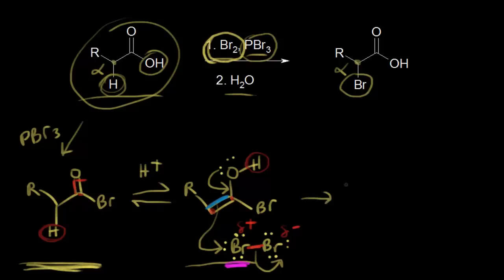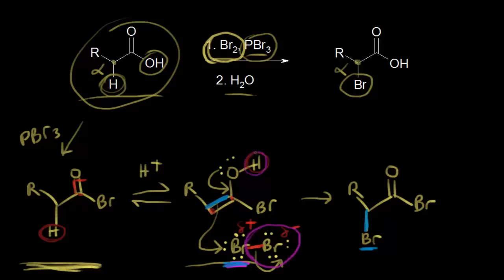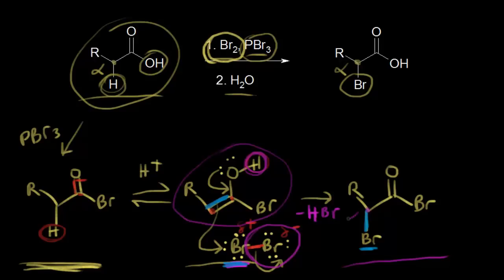So the electrons in the oxygen move in to form the carbonyl, the pi electrons in blue attack the bromine on the left, and the electrons in red come off onto the bromine on the right to form the bromide anion. We also lose a proton — loss of HBr at this step. We've converted our acyl halide enol into a molecule with a bromine at the alpha position that is still an acyl bromide: an alpha-bromo acyl bromide.